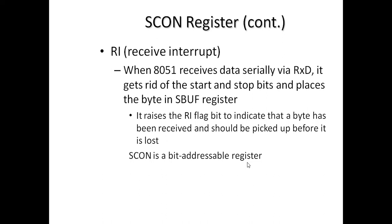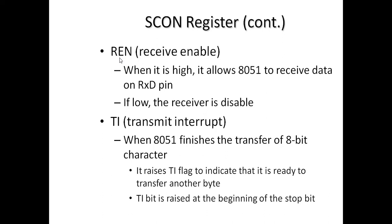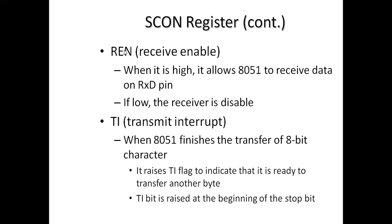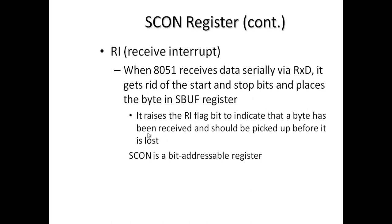SCON is a bit-addressable register, so individual bits can be accessed directly. The RI flag indicates data has been properly received. Note the difference between REN and RI: REN enables the receiver (must be set to 1 for reception to happen), while RI is the receive interrupt flag that gets set once data is properly received.